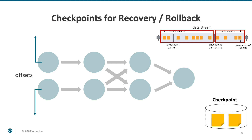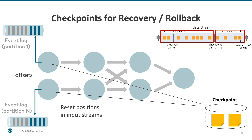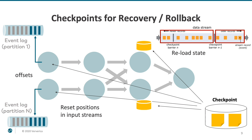During the restore phase, we reset the positions in the input streams according to the stored offsets, and then we reload the state of all of the operators. The system is therefore set to the last consistent state prior to the failure — it works almost like loading a save in a computer game. Snapshots can also be created on demand and retained for an extended period of time. This mechanism not only allows you to recover from failures, but also enables time travel capabilities — you can go back in time to fix an error in your business logic or experiment with an alternative implementation starting from a specific point in time, without having to reprocess the stream from the very beginning.